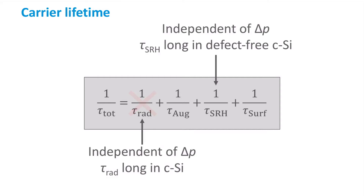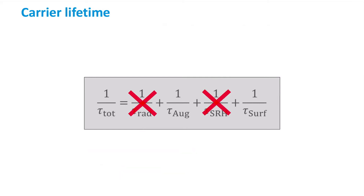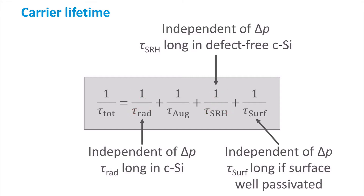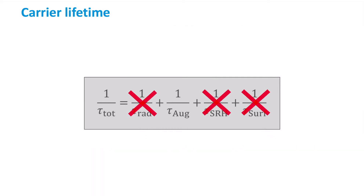Likewise, the lifetime for SRH recombination is also independent of the injection level. As in a very pure semiconductor the defect density is small, the SRH recombination rate is small and the associated lifetime is long. Thus, we also do not need to take the lifetime for SRH recombination into account when considering the injection level dependence. Finally, the lifetime associated with surface recombination is also independent of the injection level and does not need to be taken into account when looking at the injection level dependence.